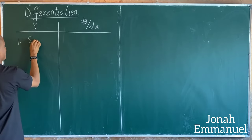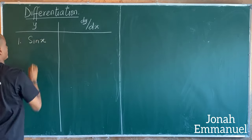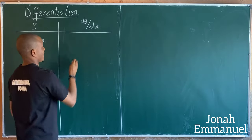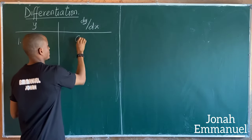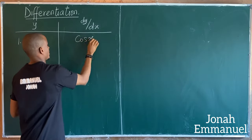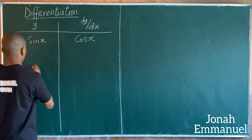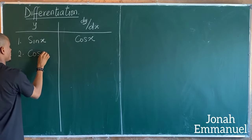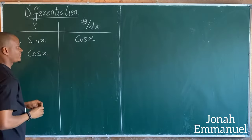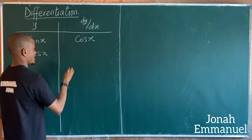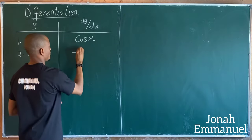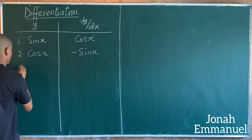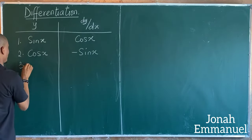Number one: if I have y = sin(x), then if I differentiate sin(x) I will get cos(x). Number two: if I have cos(x), if I differentiate cos(x) I'll have minus sin(x).